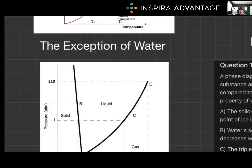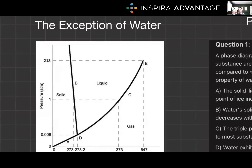Now water is an exception to many things, including having a weird curve. Most phase boundaries increase the melting point with pressure. Water is a notable exception — its solid-liquid boundary has a negative slope, meaning the melting point decreases with pressure. This unique property is due to the less dense crystal structure of ice compared to liquid water, which is attributed to an extensive network of hydrogen bonding. This results in some interesting properties we like to take advantage of, like ice skating.